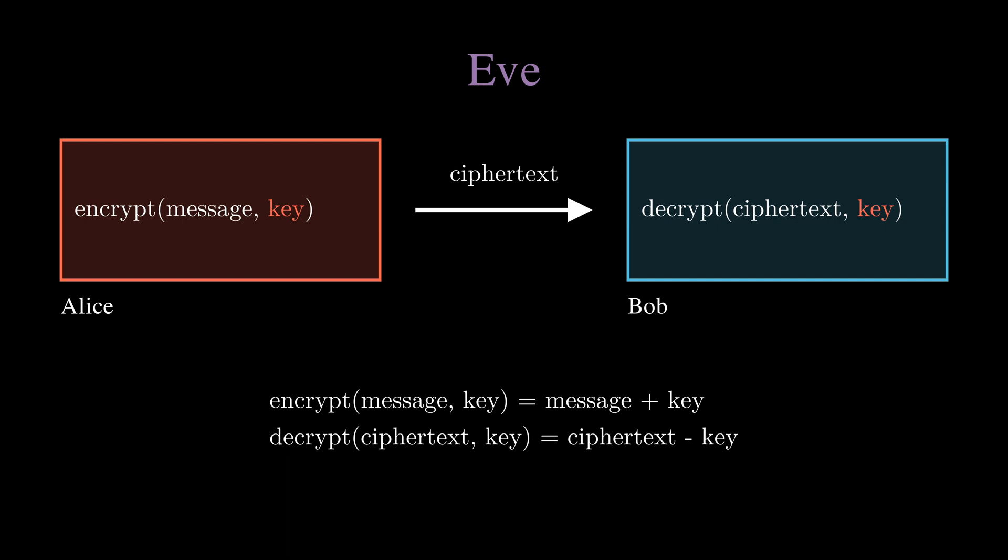So introducing public-private key encryption, where you can send messages to anyone without prior contact. Instead of encrypt adding and decrypt subtracting the same key, both of them use addition with two different keys. Now for each person, they generate their own set of two keys. For Alice, it would be 3 and negative 3, and for Bob it's 5 and negative 5.